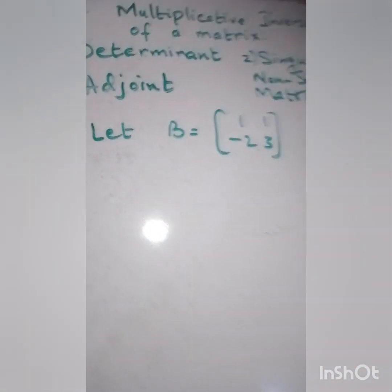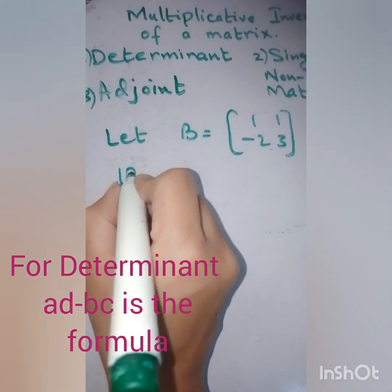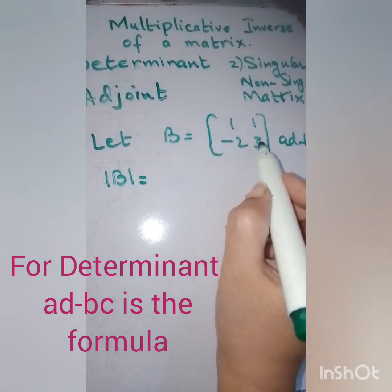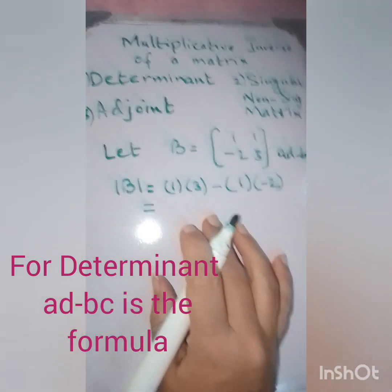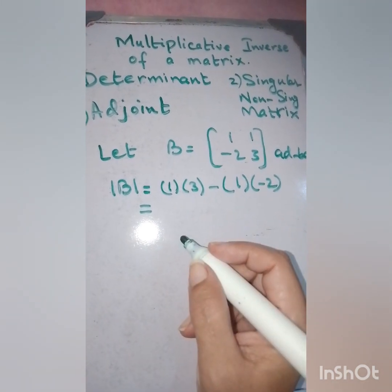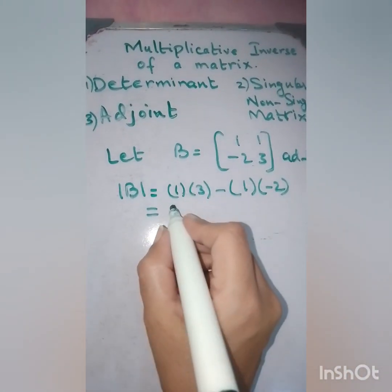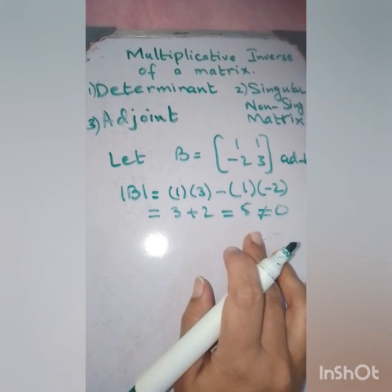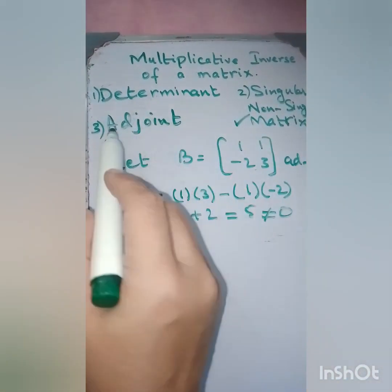Let's work through an example. We have matrix B as a 2 by 2 square matrix. Using AD minus BC: A times D is 1 multiplied by 3, minus B times C which is 1 multiplied by minus 2. That gives 3 plus 2, which equals 5 — not equal to zero. So it is a non-singular matrix and we can proceed to find the adjoint.